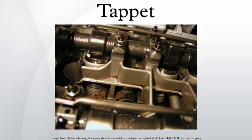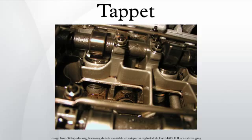Hydraulic tappets are tappets that contain a small hydraulic piston, pressurized by the engine's lubricating oil supply. Although the piston does not move appreciably or frequently, it acts as a hydraulic spring that automatically adjusts the tappet clearance according to the oil pressure, making the valve actuation self-adjusting with no need to adjust the rockers.